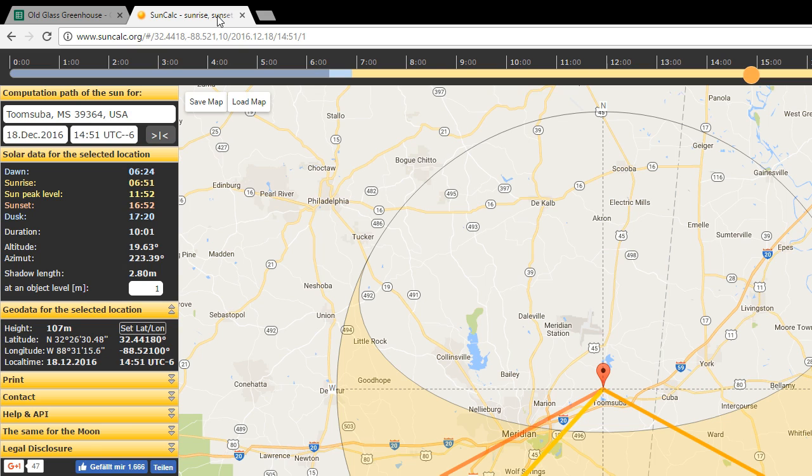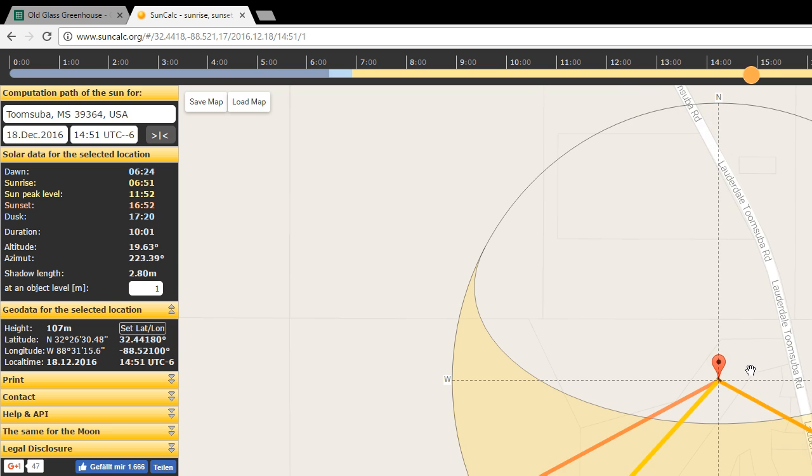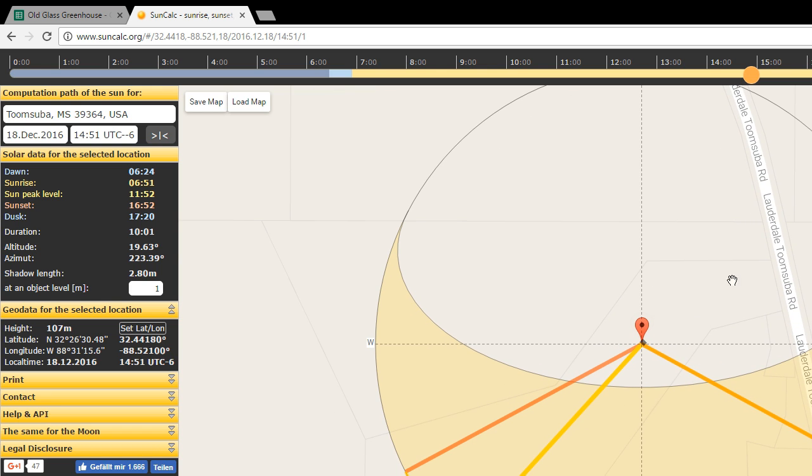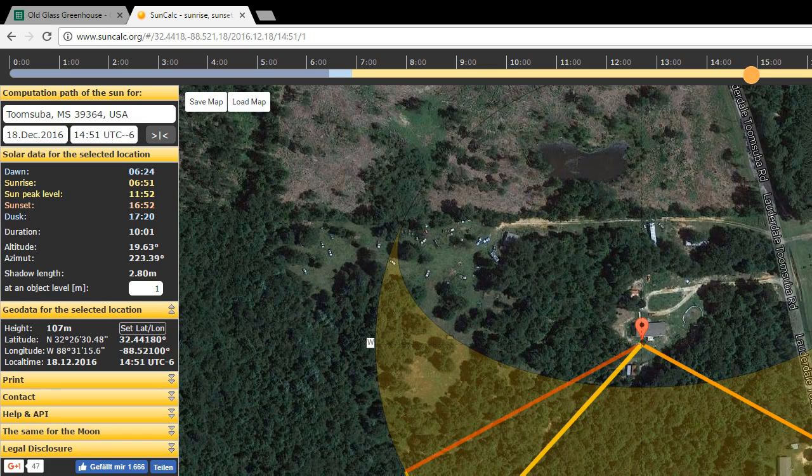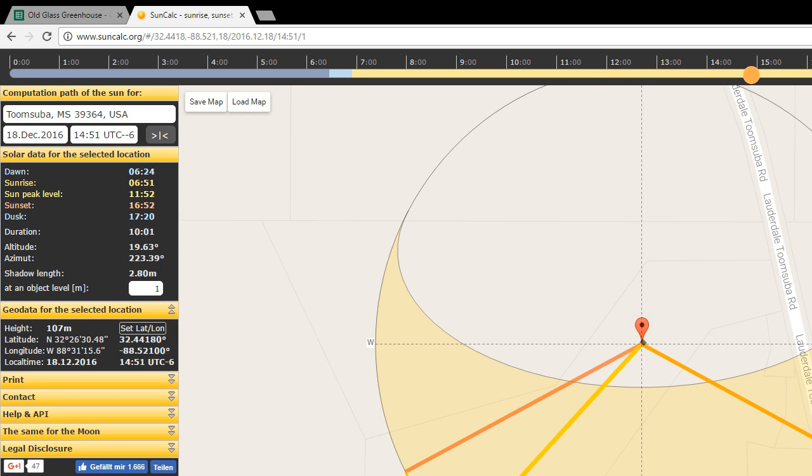But how do you actually figure out what this design is going to look like? For that, I want to take you over first to a website that I highly recommend called suncalc.org. This is a fun little website that gives you, among other things, the angle of the sun at whatever time of day you prefer. Here we are, and you can zoom this into whatever distance you want. This funny shaped piece of property here is mine, and that is right where the greenhouse is going to be. You can load on the satellite imagery if that helps you locate where you're going to go, and you can set the date and time.